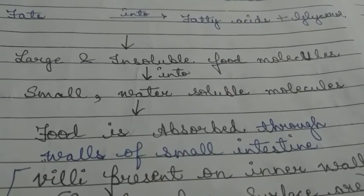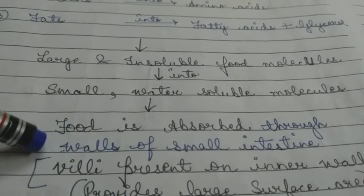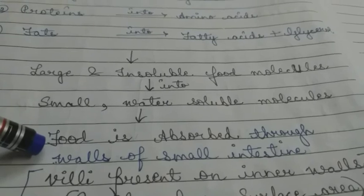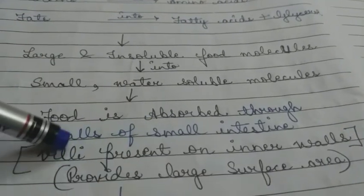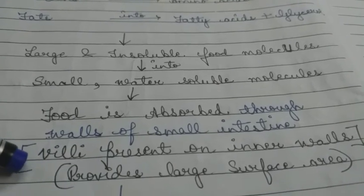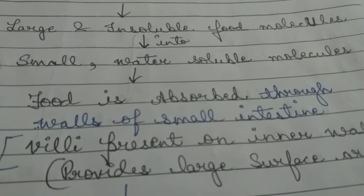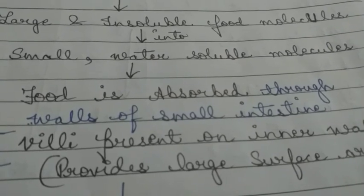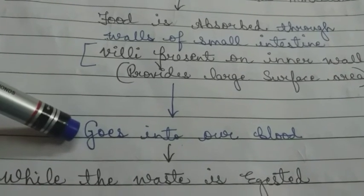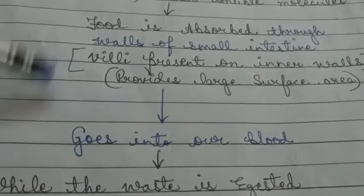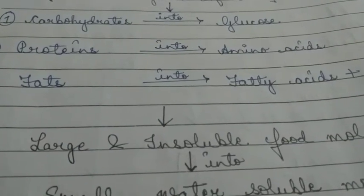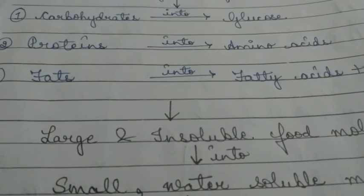The digested food is then absorbed through the walls of the small intestine. The inner surface of the small intestine walls has villi, which provide a large surface area so that food can be easily absorbed into our blood, while waste is excreted out of our body.